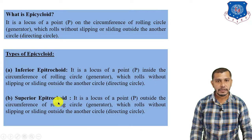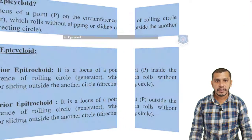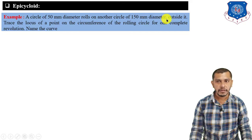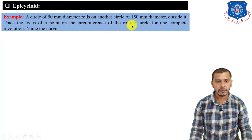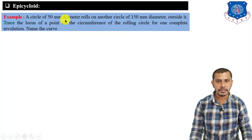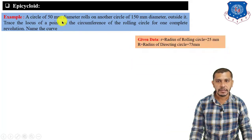Now let's start with the problem of epicycloid. The given data is: a circle of 50 mm diameter rolls on another circle of 150 mm diameter and outside of it — trace the locus of a point on the circumference of the rolling circle for one revolution, and name the curve. This statement reveals the definition of epicycloid. The radius of the generating circle is 25 mm and the radius of the directing circle is 75 mm.